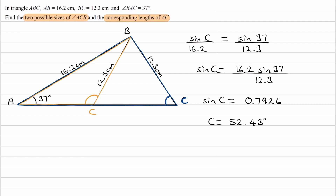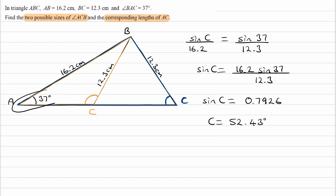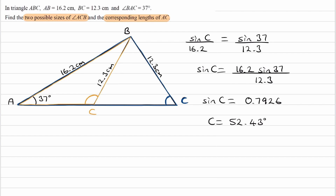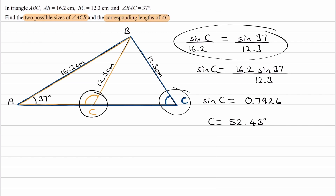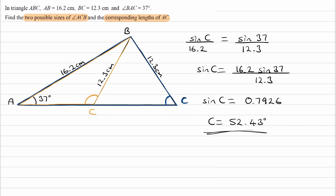This equation came from the blue triangle. Looking at the orange triangle, notice that this angle is also opposite 16.2, just as in the blue triangle, and the 37-degree angle is opposite the 12.3 side — exactly the same as in the blue triangle. So the equation to work out angle C is identical in both triangles. The easiest way to tell which triangle each angle belongs to is to look at the diagram: one is an acute angle and the other is obtuse.